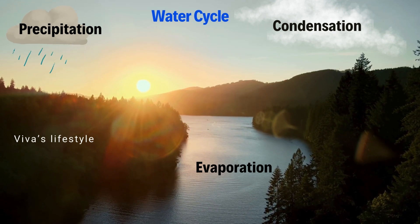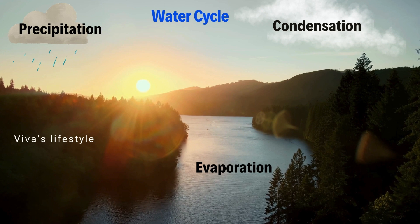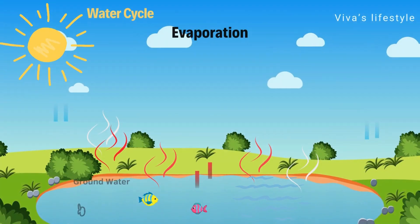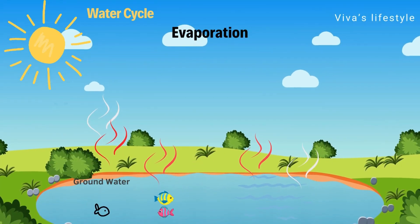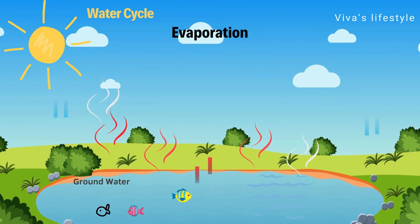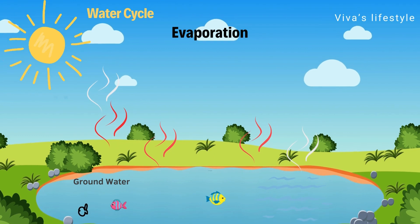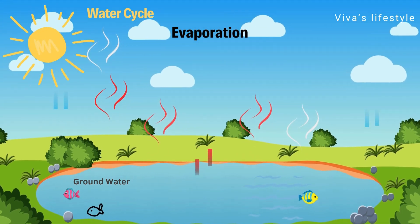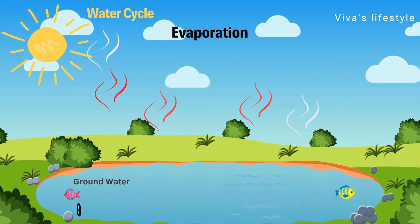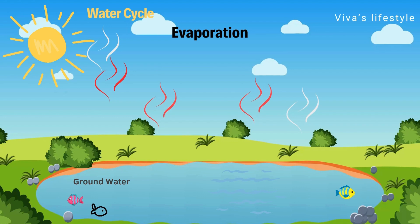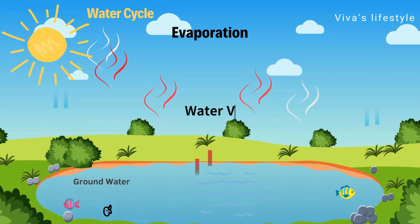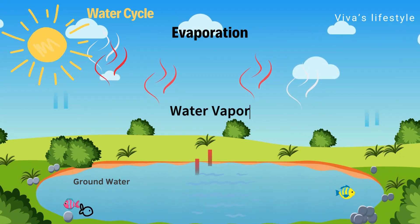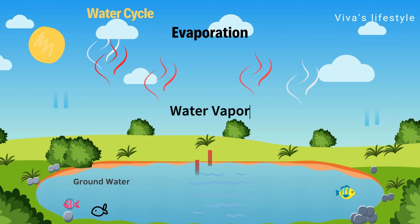Let's understand evaporation, condensation, and precipitation step by step. Sun and sunlight play a big role in the water cycle. Sun temperature heats the Earth's water sources such as oceans, rivers, lakes, etc.